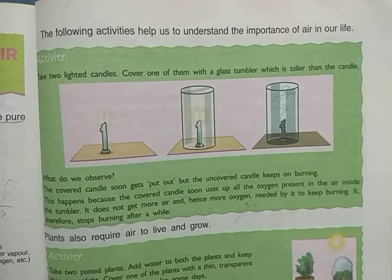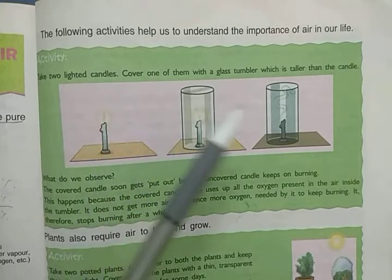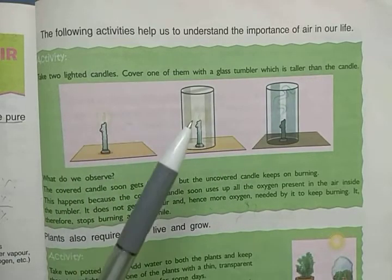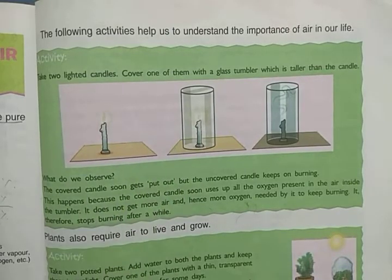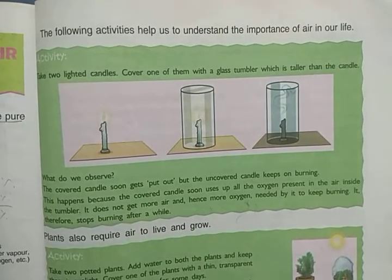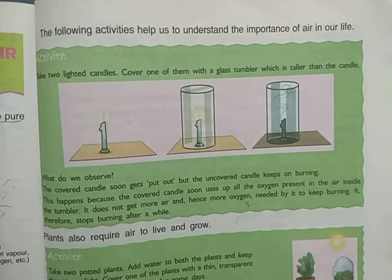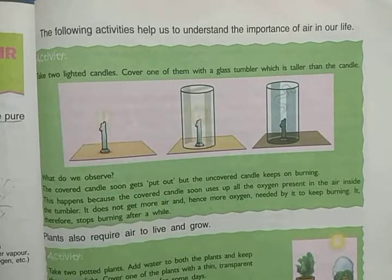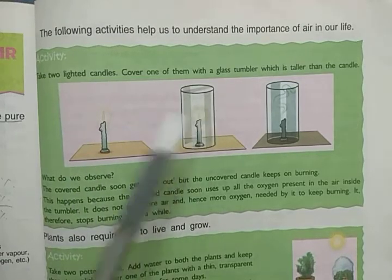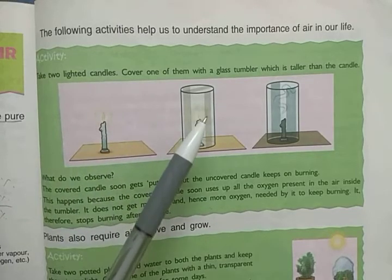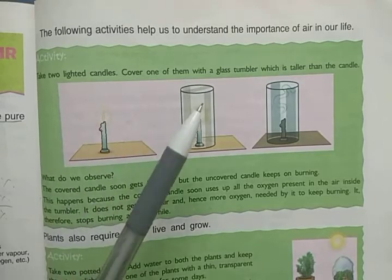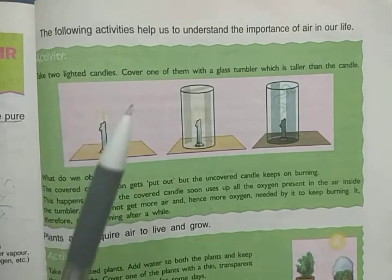Now why does this happen? Why did the covered candle go out while the other kept burning? As we discussed, oxygen is required for burning. The air inside the glass contained a fixed amount of oxygen. The candle kept burning using that oxygen, and as soon as the oxygen inside finished, the candle went out.